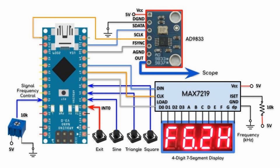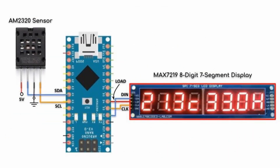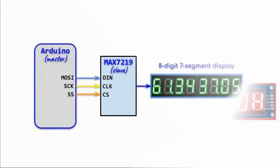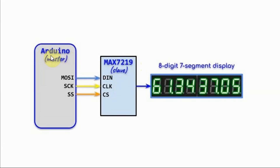You can watch my previous videos where I have used the MAX7219 integrated circuit and the MAX7219 module in different projects. The MAX7219 is interfaced with the Arduino using an SPI connection, where the master out slave in is connected to data in of the IC, the serial clock is connected to the clock pin, and the slave select is connected to the chip select of the IC. The MAX7219 can drive up to an 8-digit 7-segment display.